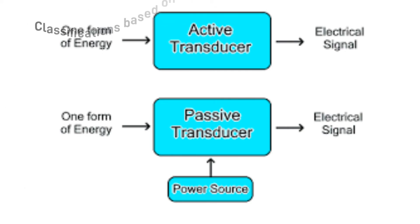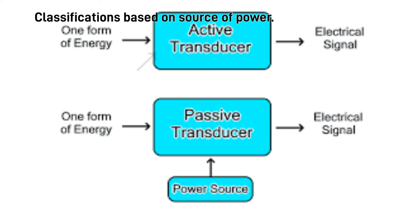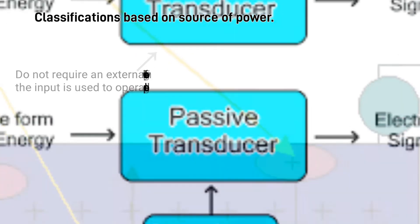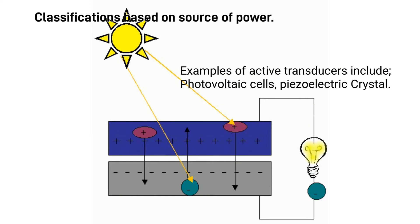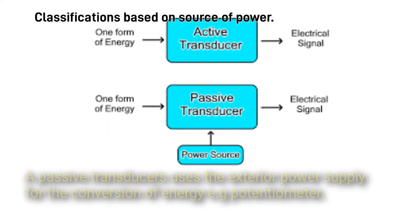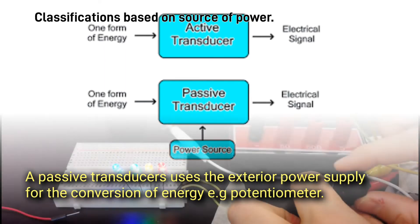Based on source of power, transducers are of two types: active transducers and passive transducers. Active transducers do not require an external power source to work — the energy from the input is used to operate and produce a proportional electrical signal. Examples include photovoltaic cells and piezoelectric crystals.